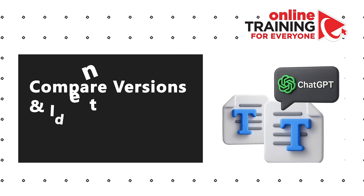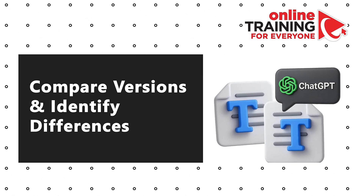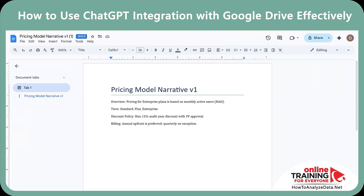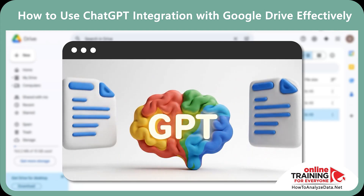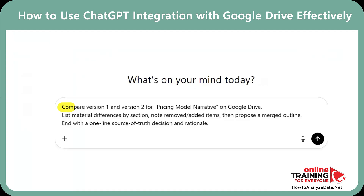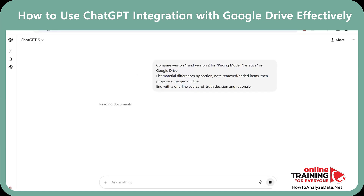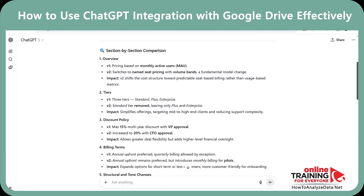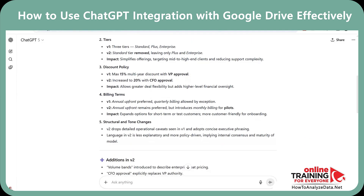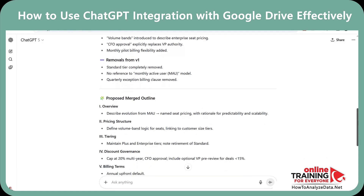Here's another typical challenge: two similar docs with conflicting policies and nobody knows which one's current. On Google Drive, there are two docs — Pricing Model Narrative version 1 and Pricing Model Narrative version 2. The solution is to ask ChatGPT to compare versions, identify differences, and resolve version chaos. The prompt: 'Compare version 1 and version 2 for the price model narrative on Google Drive. List material differences by section. Note removed and added items. Then propose a merged outline. End with a one-line source of truth decision and rationale.' In seconds, you get a section-by-section comparison covering overview, tiers, discount policy, billing terms, and structural and tone changes — plus additions in version 2, a proposed merged outline, and a source of truth decision.